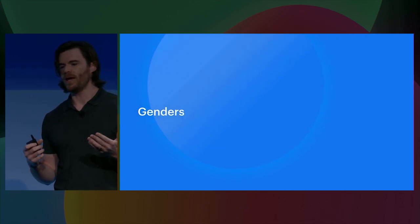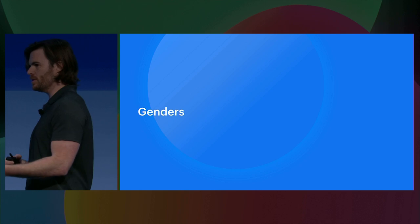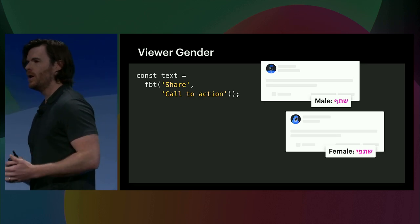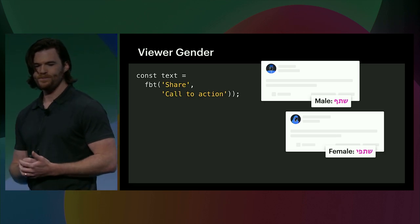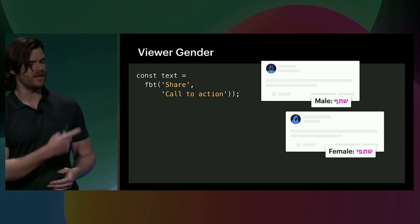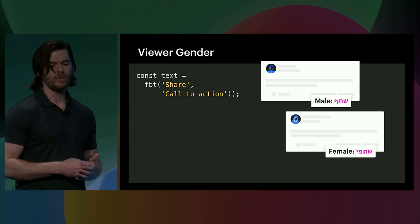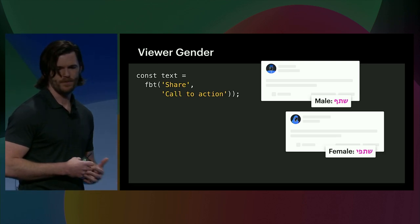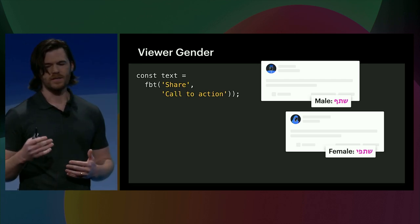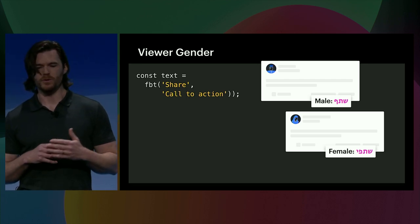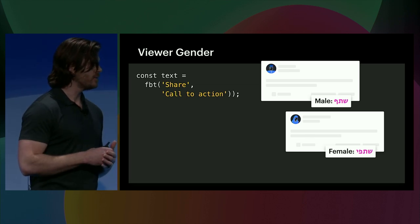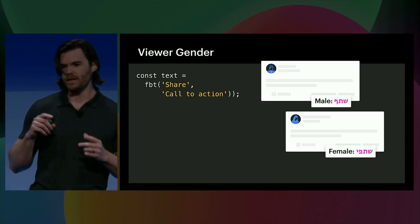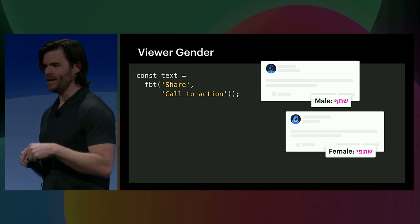We saw how the FBT framework handles the multiplexing complexities of plurals. Let's take a look at how it handles gender variations. Here's pop quiz number two — what's wrong with this text? Actually, nothing — because we wrapped it in an FBT. Normally, this text would be broken for a language like Hebrew, where command verbs are varied depending on the gender of the viewing user. However, behind the scenes, a translator can vary a sentence based on the viewing user's gender. We mark that text with a hidden key, and at runtime, the FBT knows to access the viewing user's key in the payload runtime table.